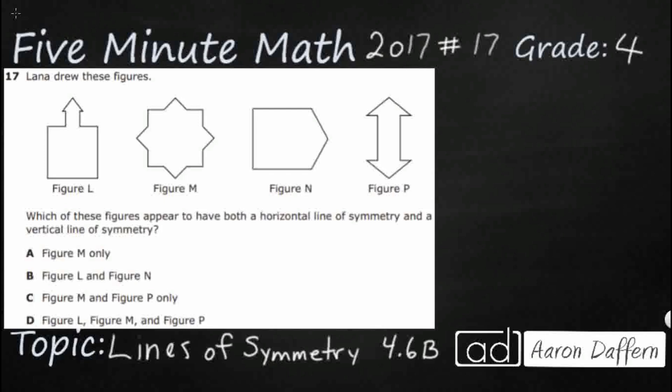So we have four figures: L, M, N, and P, and we need to see which figures appear to have both a horizontal line of symmetry and a vertical line of symmetry. So we've got three different terms we need to make sure we understand. Horizontal, vertical, and then obviously the biggest one is going to be this symmetry right here. So let's start with that.